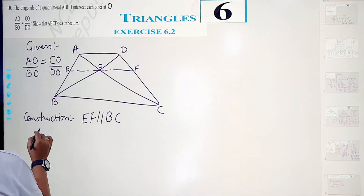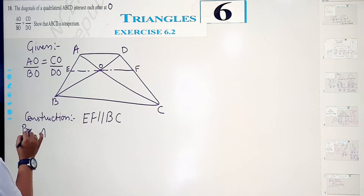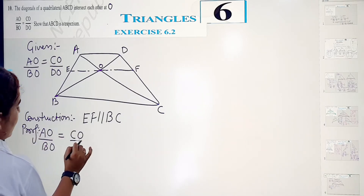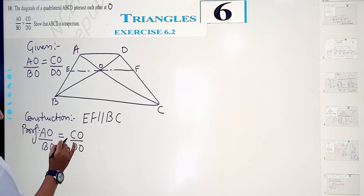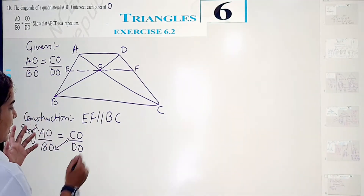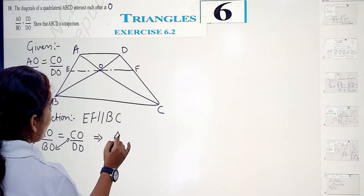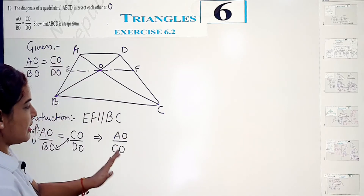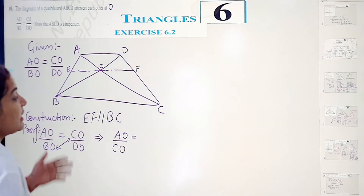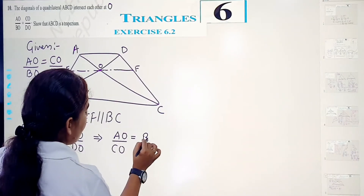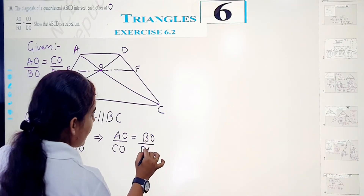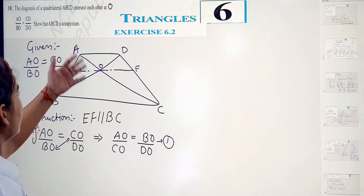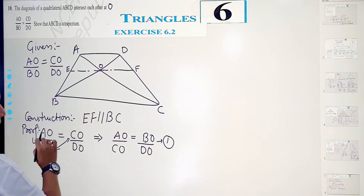Now let's come to the proof. We are given AO/BO = CO/DO. I will rearrange this a little — by cross multiplication or cross transferring — bringing CO under AO, so AO/CO = BO/DO. This becomes equation number 1.